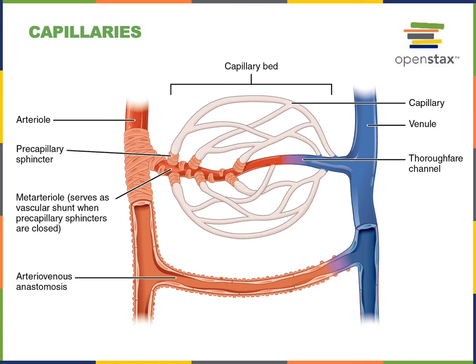Capillaries are the smallest blood vessels, providing the site for exchange of substances between the blood and other tissues. Oxygen moves from the air of the alveoli into the capillaries of the pulmonary circuit, and carbon dioxide moves from the blood out into the air in the alveoli. In the systemic capillaries, oxygen moves from the blood out into the tissues to support cellular metabolism, while carbon dioxide and metabolic waste move from the tissue into the blood. Other substances such as hormones can also move in and out of the blood at the capillaries.